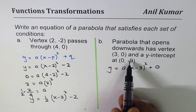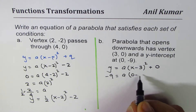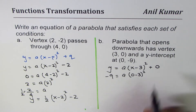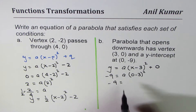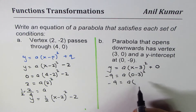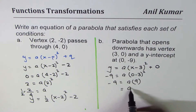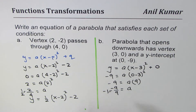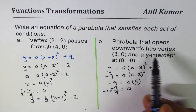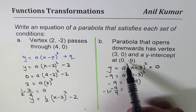The y-intercept is (0, -9), so 0 is the x-value and -9 is the y-value. We write -9 = a(0 - 3)², which gives -9 = a(9), so a = -9/9, which equals -1.